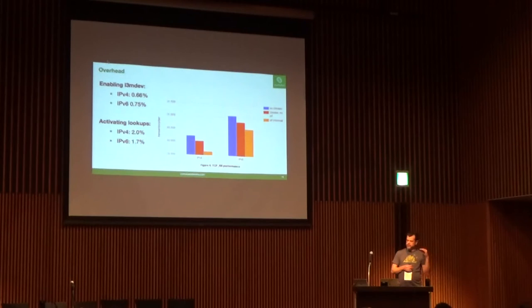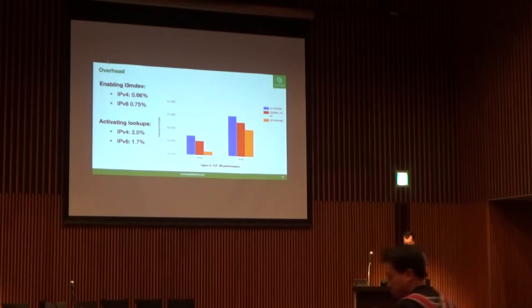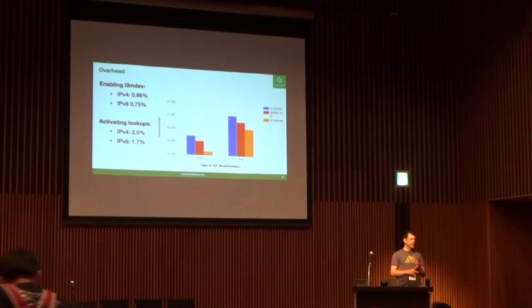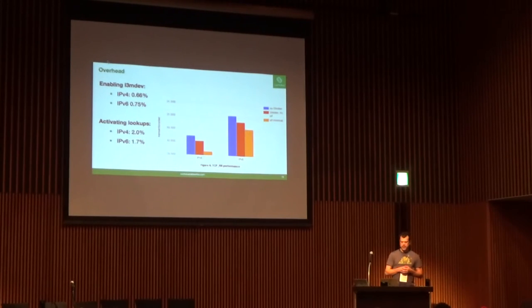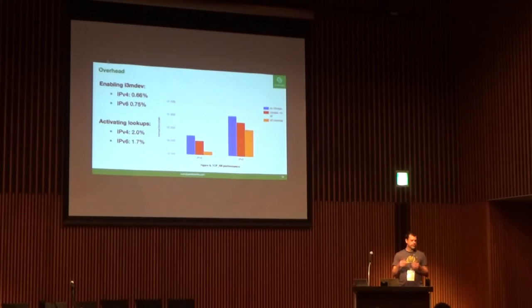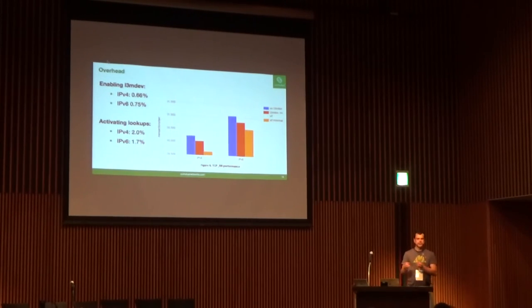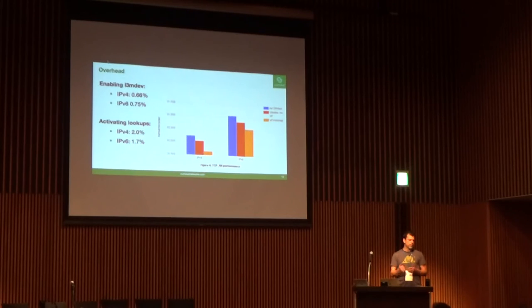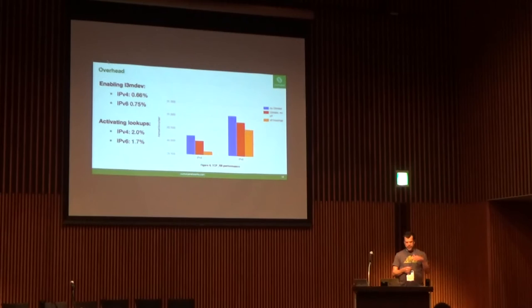Using L3 MDEV compiled out as baseline: compiling it in shows about 0.75% impact for IPv6 and 0.66% for IPv4 — a small performance impact just from enabling the kernel config. When activating those lookups, where the OIF or IIF is actually an enslaved device or an L3 master device, the performance hit climbs to about 1.7 to 2.0%, which is fairly small overall but there is a noticeable impact with activating these hooks.